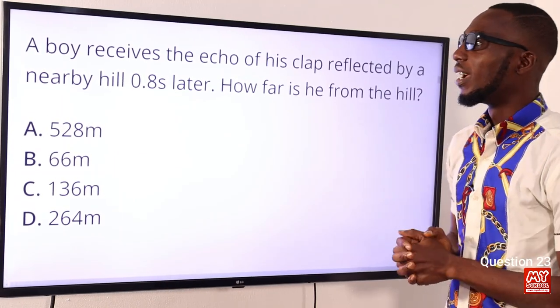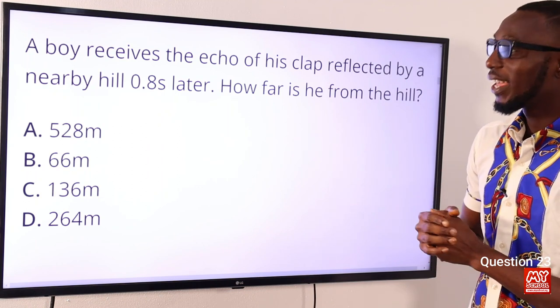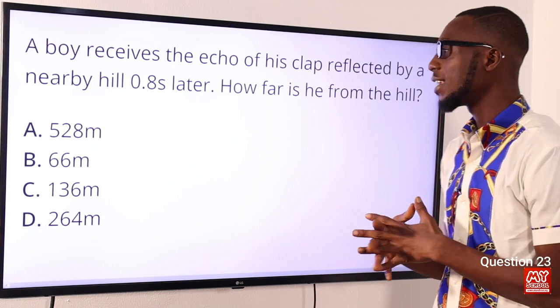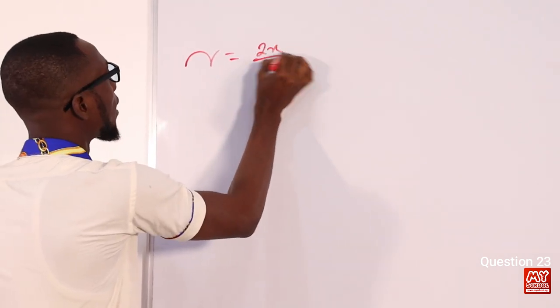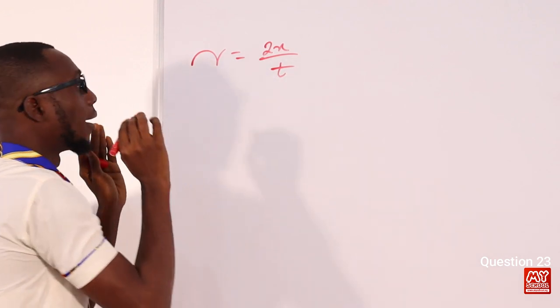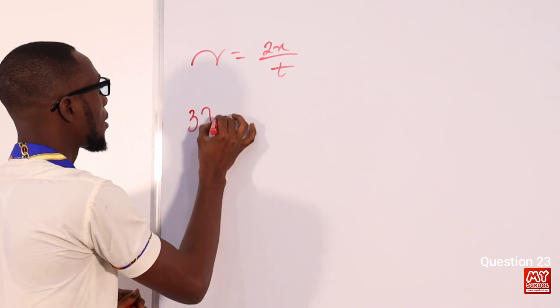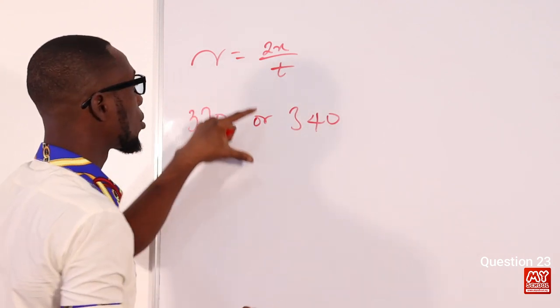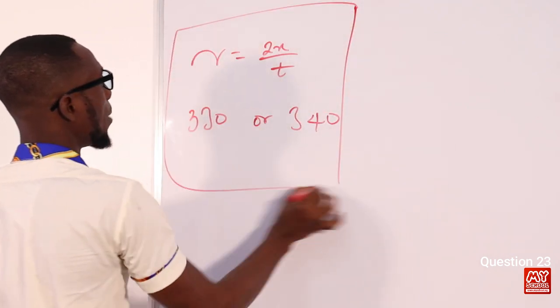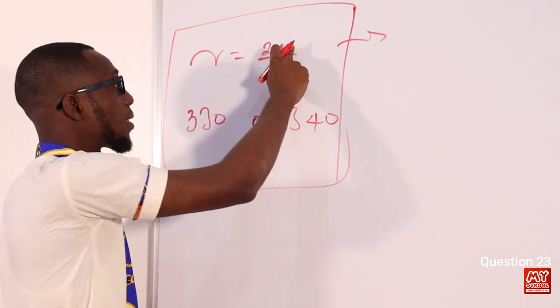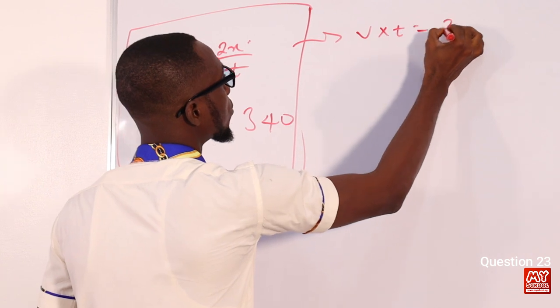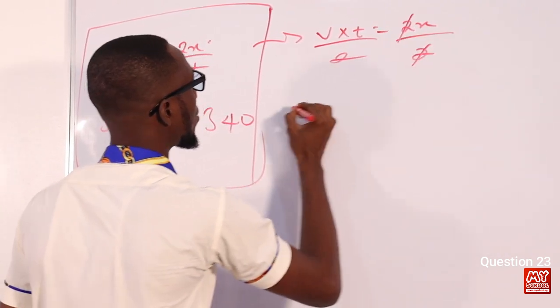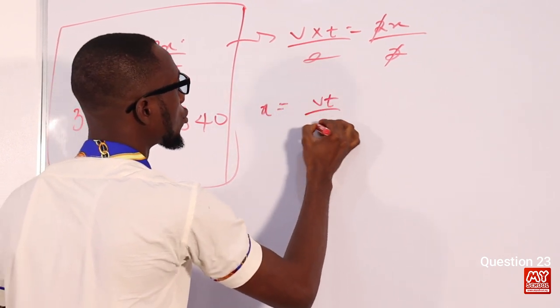Question 23: A boy receives the echo of his clap reflected by a nearby wall 0.8 seconds later. For echo problems, the formula is v = 2x/t, where x is the distance to the wall. Rearranging: x = vt/2. We will work with both common values of the speed of sound: 330 m/s and 340 m/s.